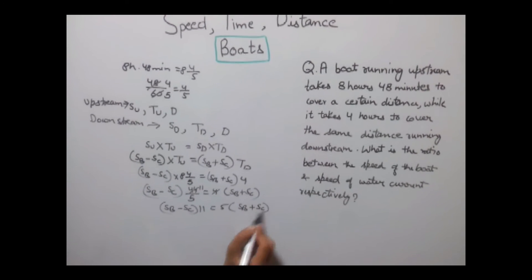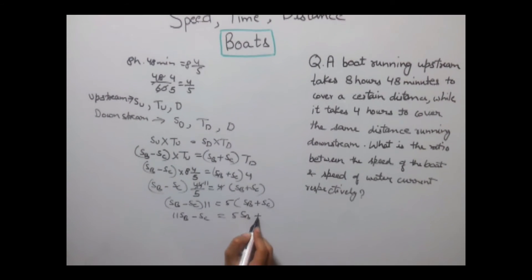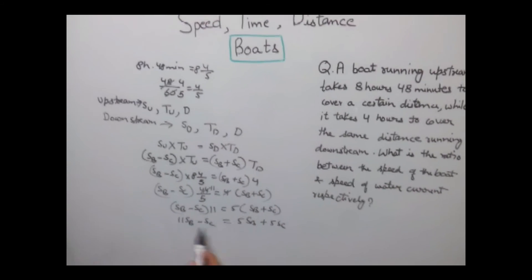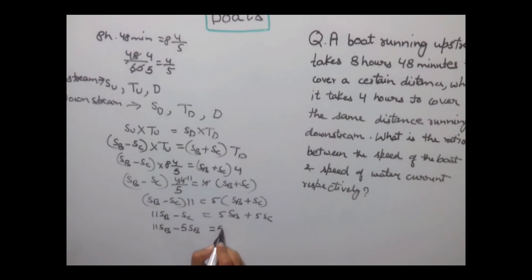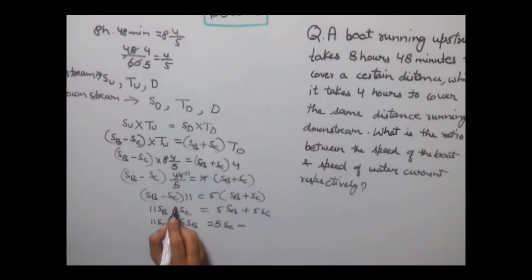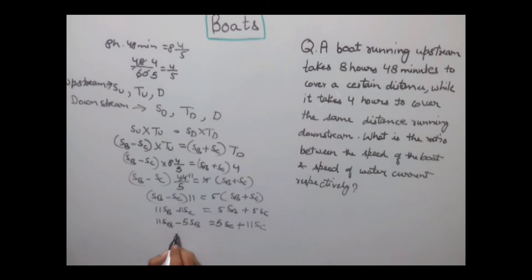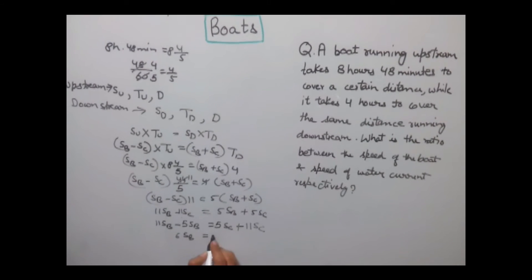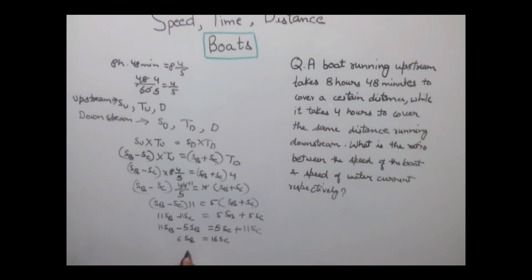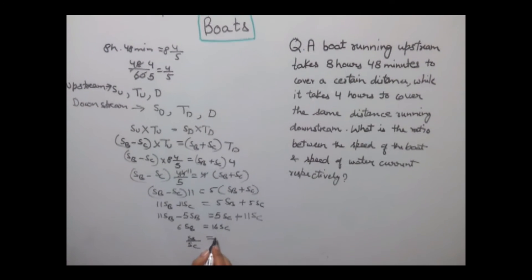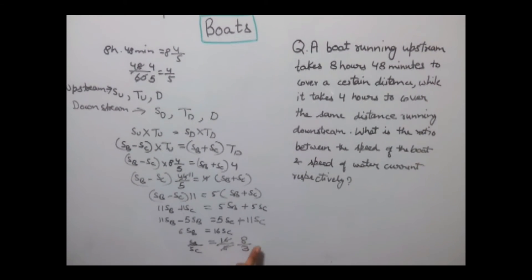Expanding: 11·SB minus 11·SC equals 5·SB plus 5·SC. Bringing SB and SC together: 11·SB minus 5·SB equals 5·SC plus 11·SC. This gives 6·SB equals 16·SC. Therefore SB by SC equals 16 by 6, which equals 8 by 3. So the ratio of speed of boat to speed of current is 8:3.